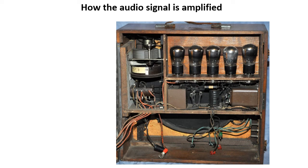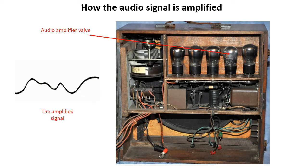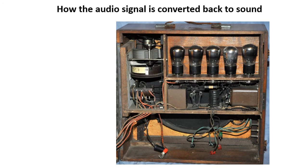The detected audio signal is still too small to operate a loudspeaker, so it is then amplified by the audio amplifier valve. The audio signal is then amplified again by the audio output valve until the signal is large enough to power the loudspeaker, part of which can be seen at the bottom of the picture.